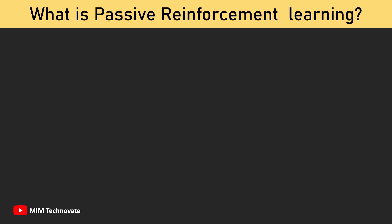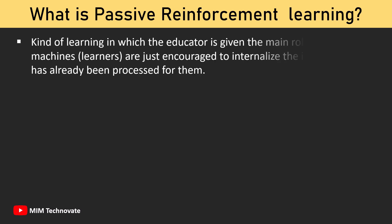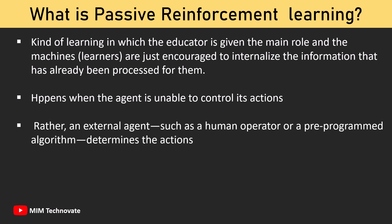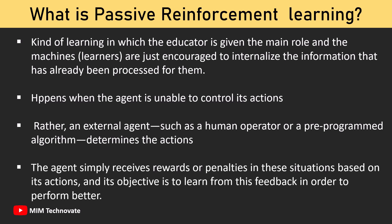What is Passive Reinforcement Learning? Passive learning is a different kind of learning in which the educator is given the main role and the learners are encouraged to internalize information that has already been processed for them. Passive Reinforcement Learning happens when the agent is unable to control its actions. Instead, an external agent — such as a human operator or a pre-programmed algorithm — determines the actions. The agent receives rewards or penalties based on its actions and learns from this feedback to perform better.